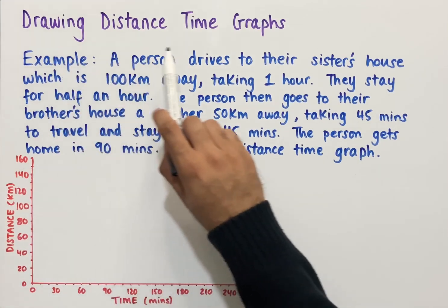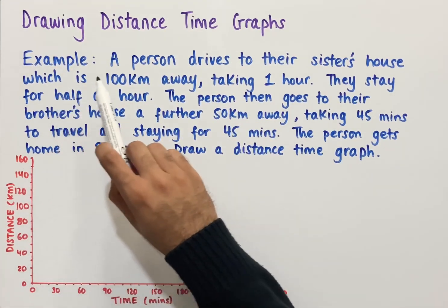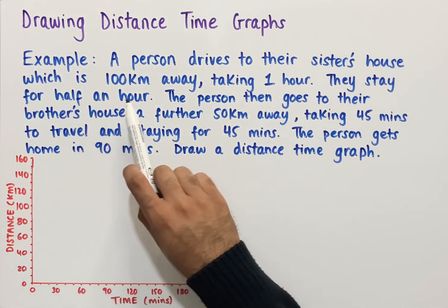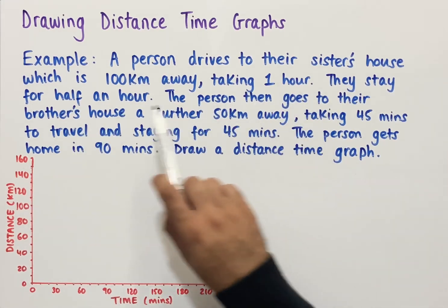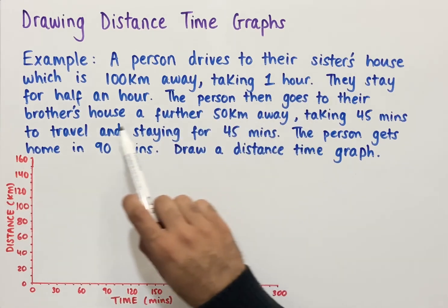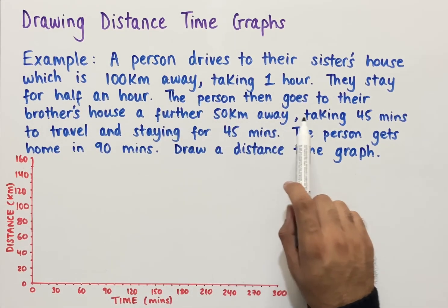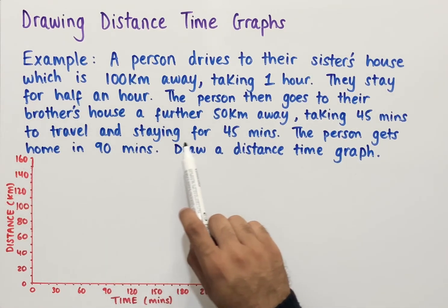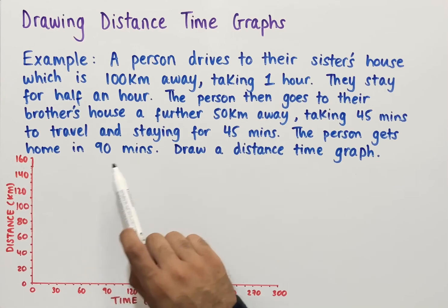Let's look at drawing distance time graphs. A person drives to their sister's house which is 100 kilometers away, taking one hour. They stay for half an hour. The person then goes to their brother's house a further 50 kilometers away, taking 45 minutes to travel and staying for 45 minutes. The person gets home in 90 minutes.